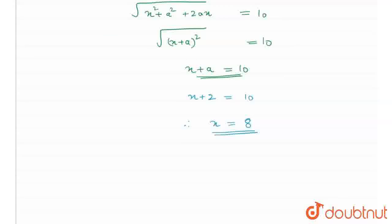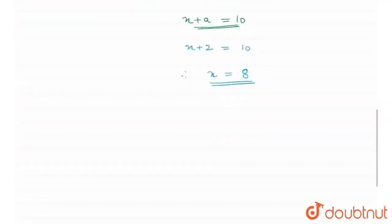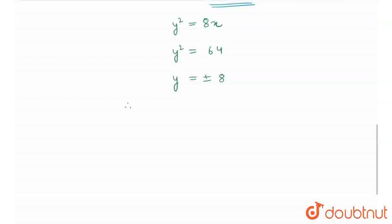Now, we need to find the y coordinate and I know that my equation is y square is equal to 8x. I will put this 8 in this equation. So my y square is equal to 64. So my y is equal to plus minus 8. Therefore, my coordinates would be 8,8 and 8, minus 8.